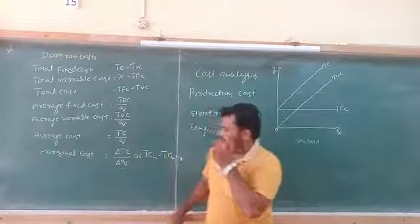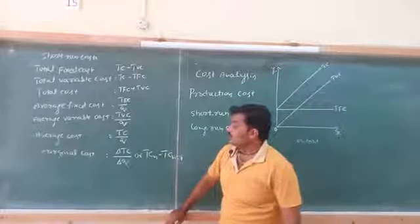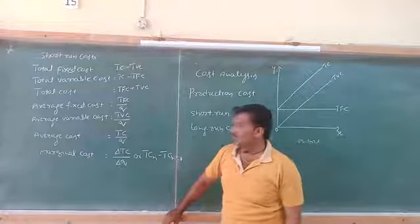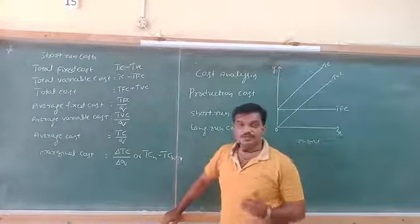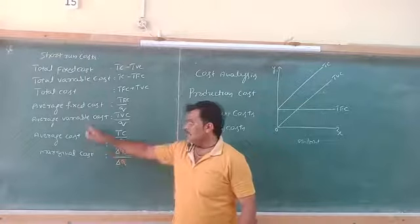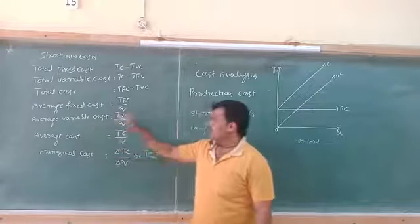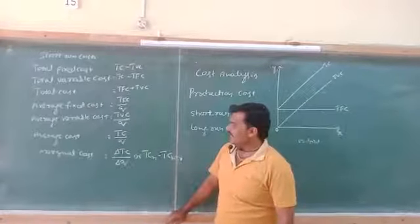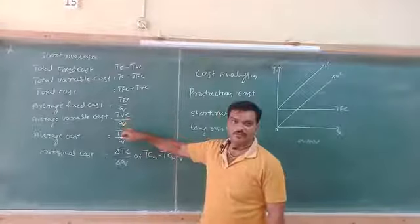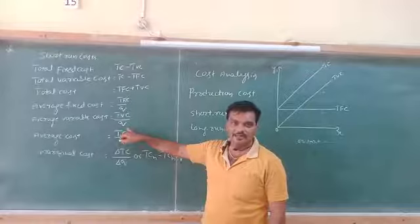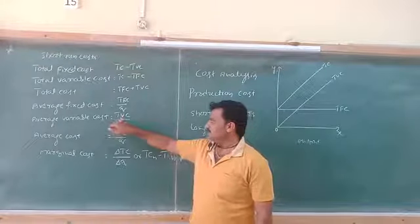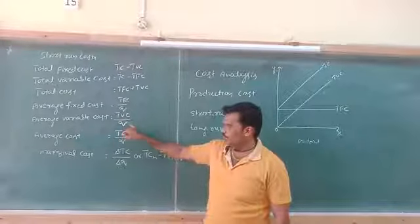The fifth type is Average Variable Cost (AVC). Average Variable Cost means the cost per unit of variable input. It can be calculated by dividing Total Variable Cost by the units of variable input. That is, AVC = TVC / Q.